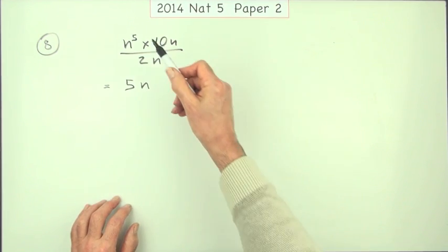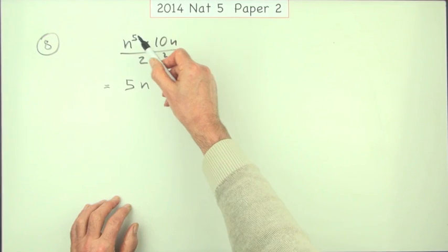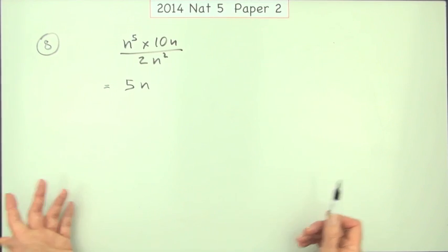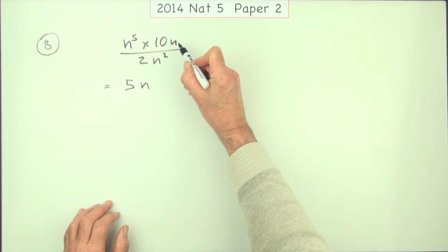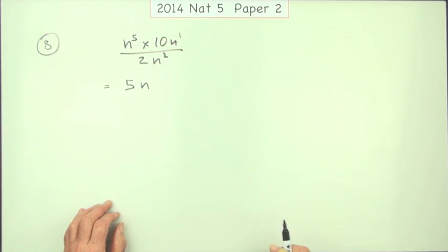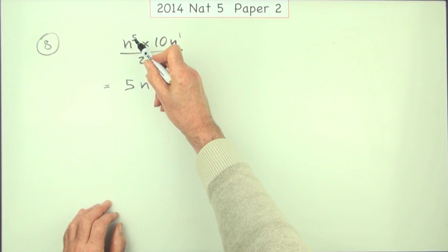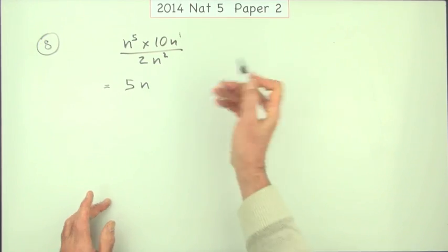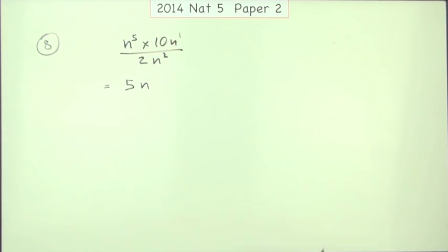How do you find that? Well if they're multiplying you would add them and if they're dividing you subtract them. So you could just do that in your head. Remember of course the n on its own is power one. So you'll just say five plus one is six, take away two is four, and there's your answer. That's why you would get the three marks just for stating it.